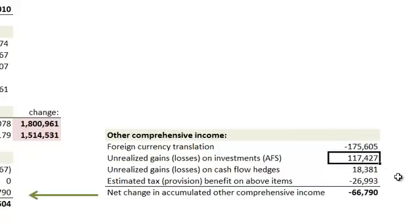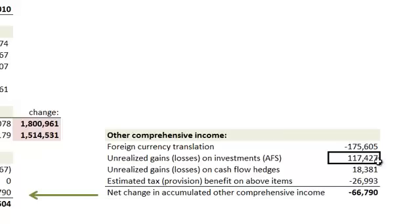Then we have unrealized gains or losses on investments that are available for sale. Here, eBay gained almost $120 million — an unrealized gain on certain investments that are available for sale. If eBay is not trading these investments, it does not need to recognize the gains or losses on the income statement. Rather, it's reported here in other comprehensive income, and that's how we reconcile the change to total stockholders' equity.